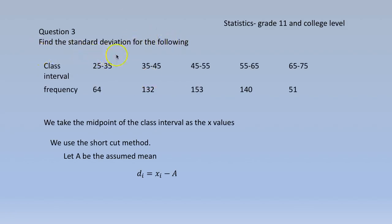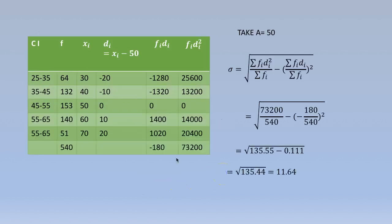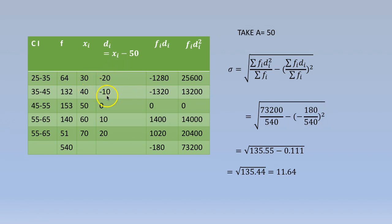Next problem: find the standard deviation for the following data. We are given the class interval and frequency, so we take the midpoint of the class interval as the x values and use the shortcut method. We let a be the assumed mean and write di equal to xi minus a. The middle values are 30, 40, 50, 60, 70, so we choose 50 as a. Thus di equals xi minus 50: 30 minus 50 gives minus 20, 40 minus 50 gives minus 10, then 0, 10, and so on.